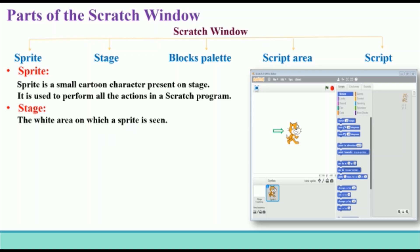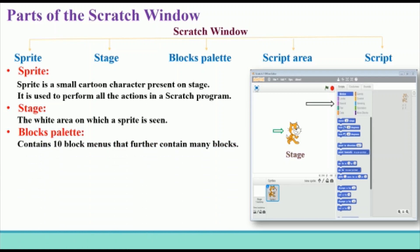The sprite is used to perform all actions in a Scratch program. Stage: the wide area on which the sprite is seen is called the stage — the sprite moves and performs all actions on the stage. Block Palette: the Block Palette contains 10 block menus that further contain many blocks. The block menus differ from each other by name and color. Blocks are dragged and placed one after the other to make the sprite work.